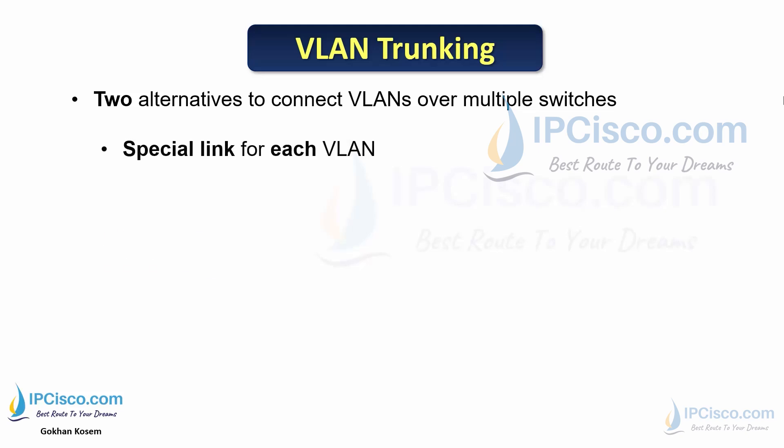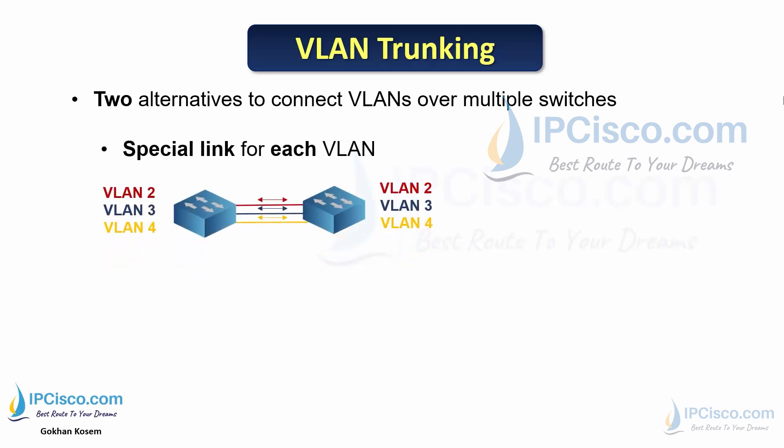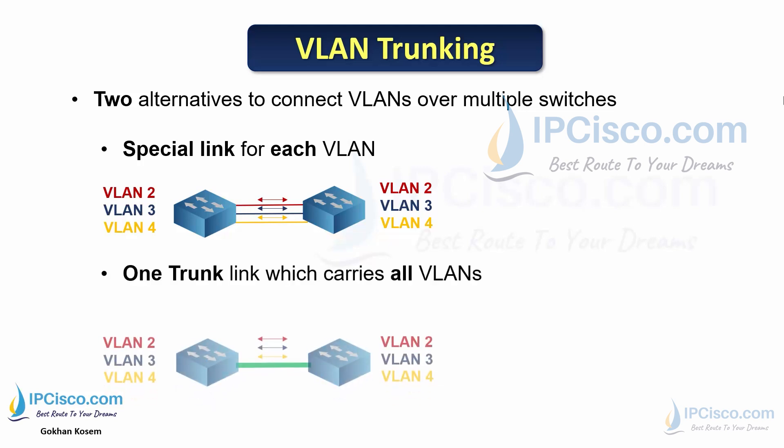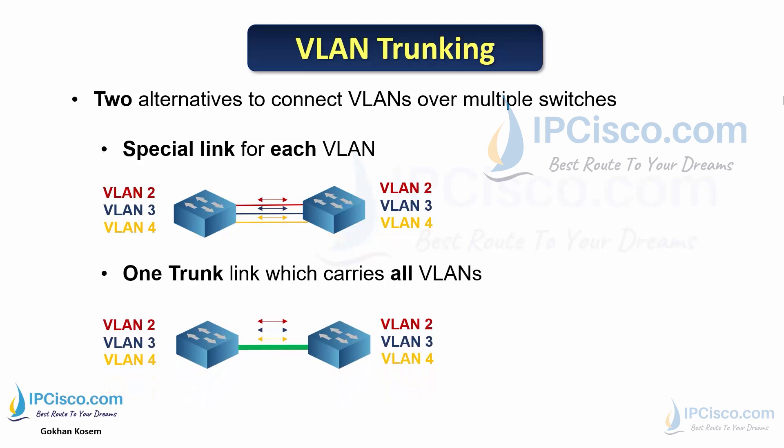There are two alternatives to connect VLANs over multiple switches. The first is using a special link for each VLAN, which is not an efficient way. The second way is using one trunk link that carries all VLANs, and in virtual LANs, we use this second technique.